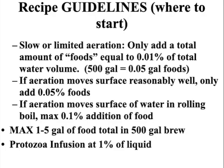Recipe guidelines: look at your brewer. If you don't have a lot of aeration, you only want to add a total amount of food that's about 0.1 percent. You can't be adding a lot of food if you don't have really good aeration. In a 500-gallon tank you're only putting a couple of ounces total of food into that volume of water if you don't have good aeration.